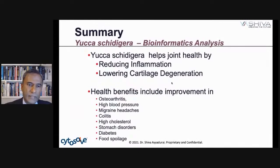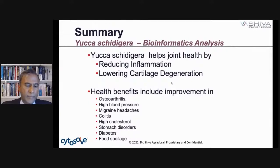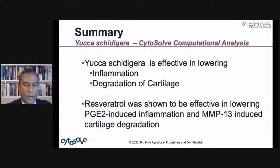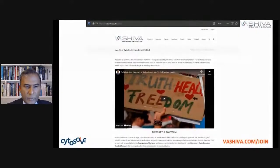In summary, yucca schidigera helps joint health by reducing inflammation and lowering cartilage degeneration. The health benefits include osteoarthritis, high blood pressure, migraine headaches, colitis, high cholesterol, stomach disorders, diabetes, and food spoilage prevention. Our computational research showed it's really good for inflammation and cartilage degradation, and most importantly, the resveratrol in it was shown to be effective in lowering PGE2-induced inflammation and MMP-13-induced cartilage degeneration. I hope this was valuable — thank you, everyone. Have a good night. Be well.